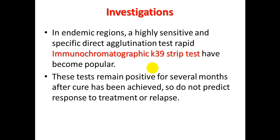In endemic regions, the direct agglutination test and the immunochromatographic K39 dipstick test, which is part of the antigen from the parasite, have become popular with high sensitivity and specificity. These tests remain positive for several months, so a positive test in an asymptomatic patient does not mean treatment is needed. Tests continue to be positive even after treatment, so they are useful for diagnosis of symptomatic patients but not for follow-up.